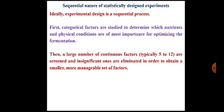In the second step, continuous factors — meaning numerical factors — which may be in a number of 5 to 12 in general, are screened and insignificant ones are eliminated in order to obtain a smaller, more manageable set of factors. We learned in full factorial design that the limiting factor is the number of factors, so if this number is reduced, studying each factor in detail becomes possible. Therefore, the next step is to eliminate the insignificant factors.